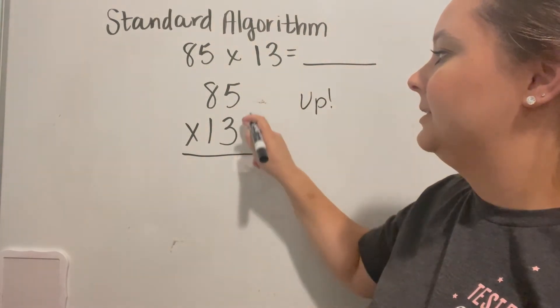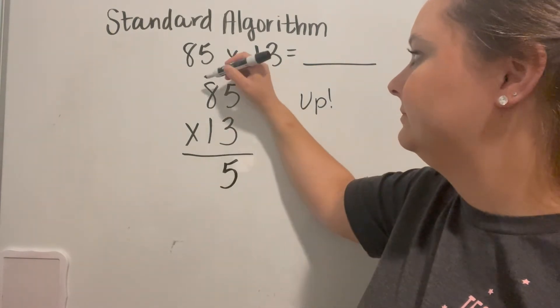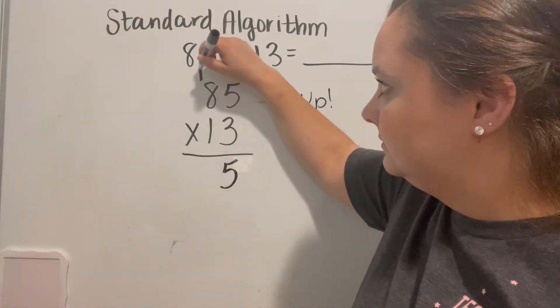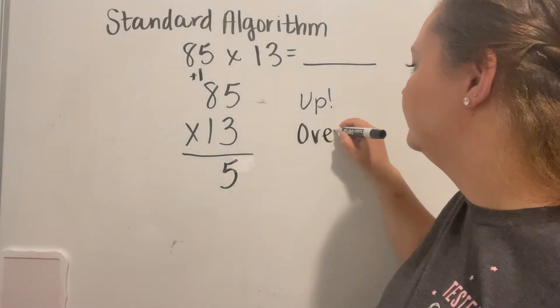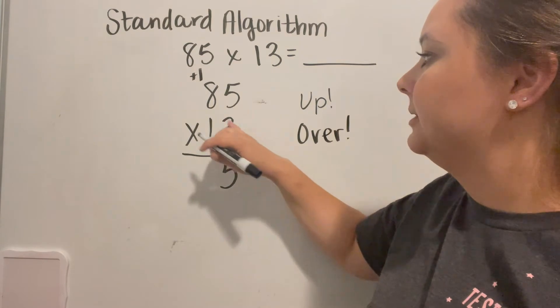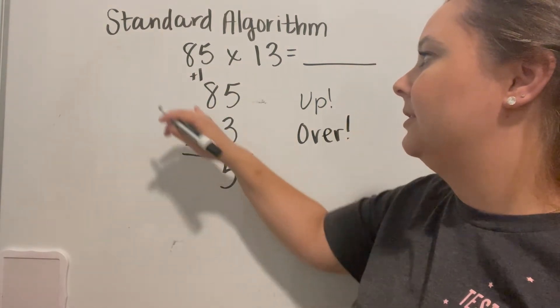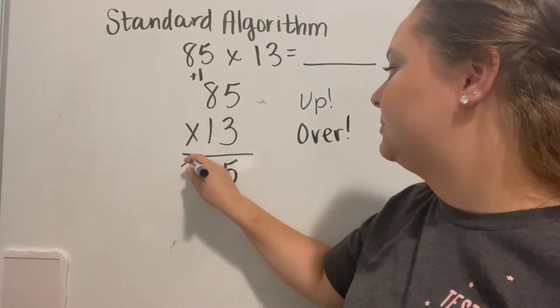So we go up. So we have 3 times 5, which gives me 15. Now we go over. So 3 times 8, which gives me 24 plus our 1 gives me 25.